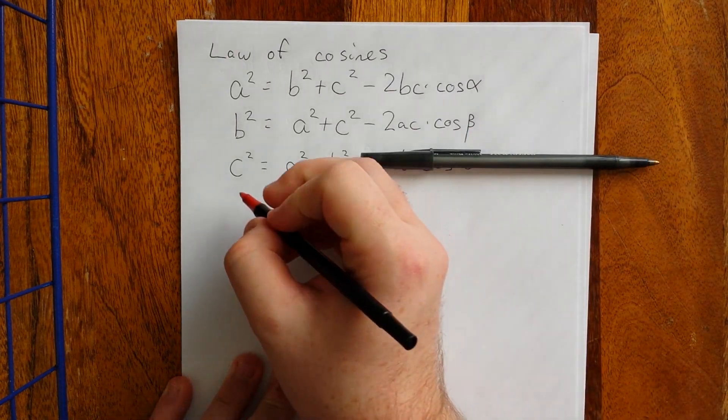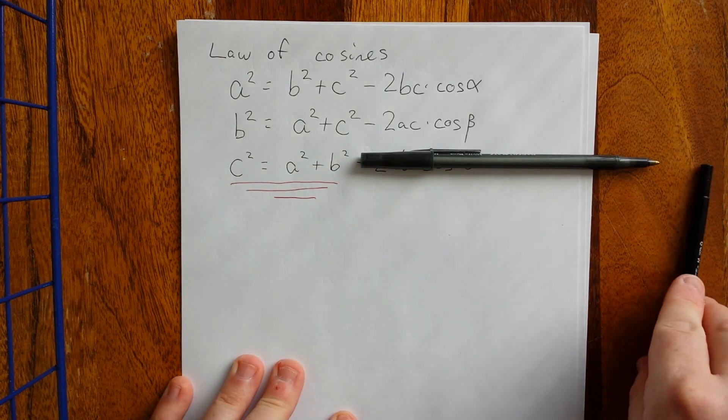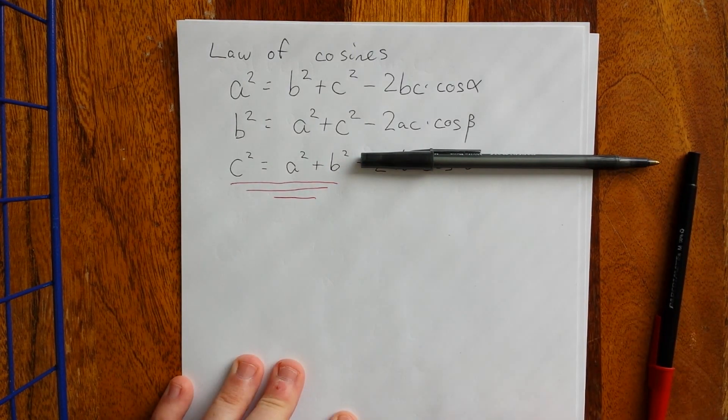So if I were to cover that bad boy up right here and have just this guy right here, hopefully that looks pretty familiar to you. That's our old Pythagorean theorem. C squared is equal to A squared plus B squared.